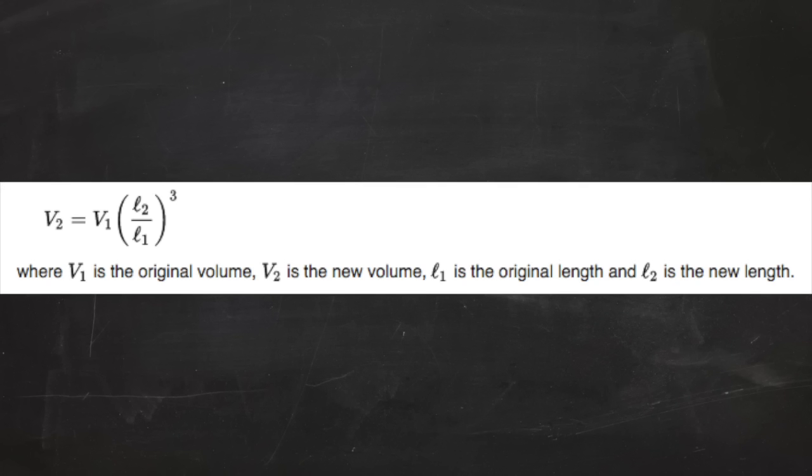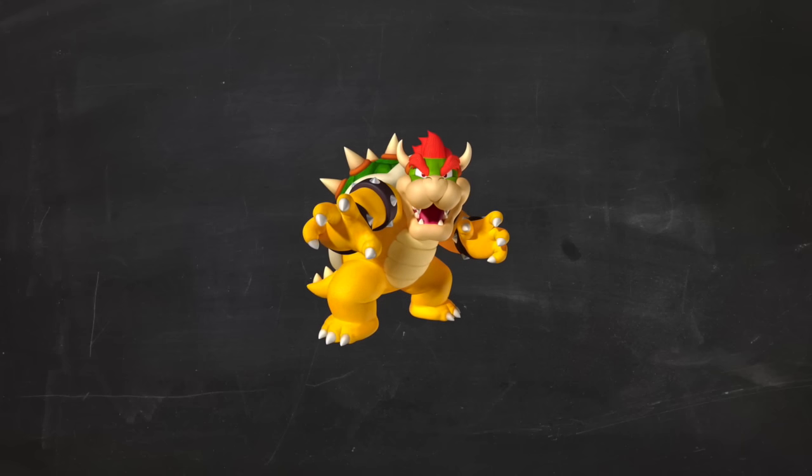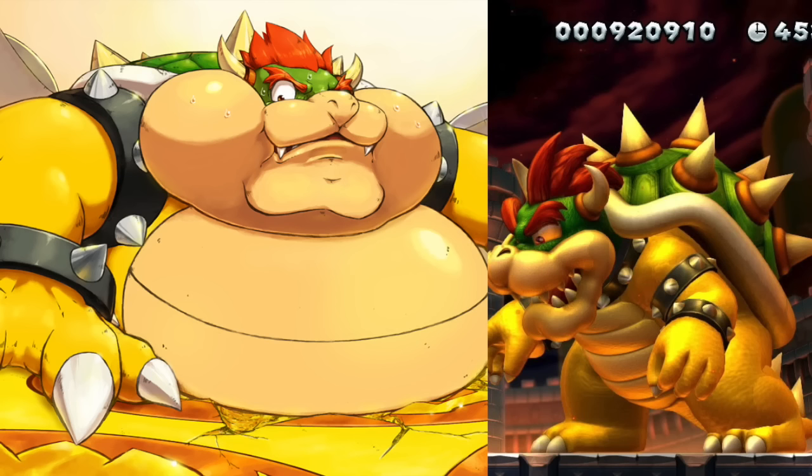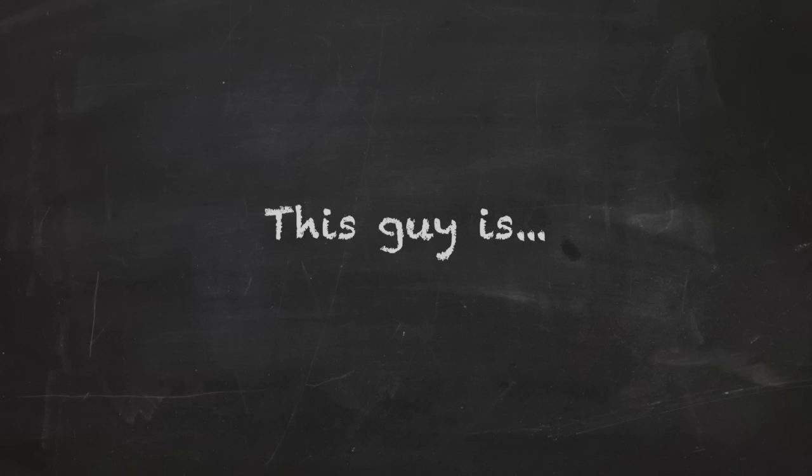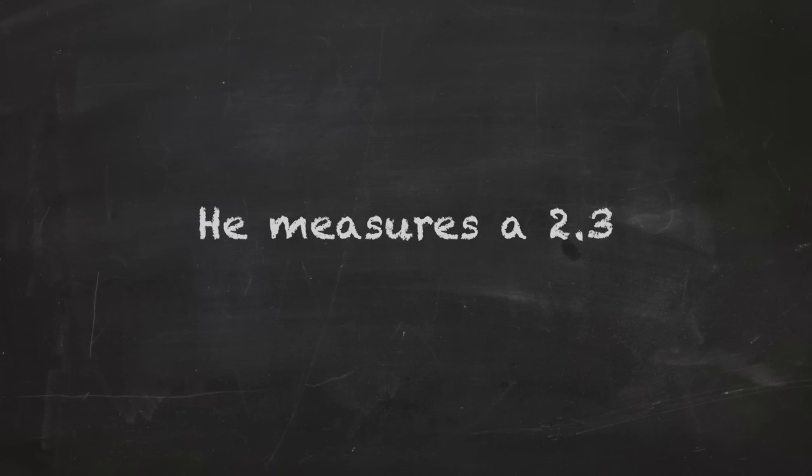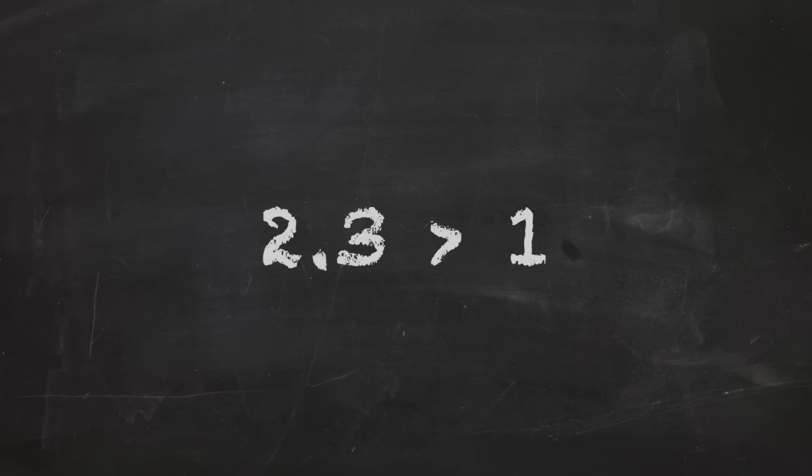But then we swap units for metric and throw it into the square cube law formula, a formula that can tell us how something's weight will change based on its height. And you will not believe how heavy this massive version of Bowser is. This guy is 1,220,907 pounds. Let's see what this guy measures on the Richter scale when jumping from 100 feet. He measures a 2.3,